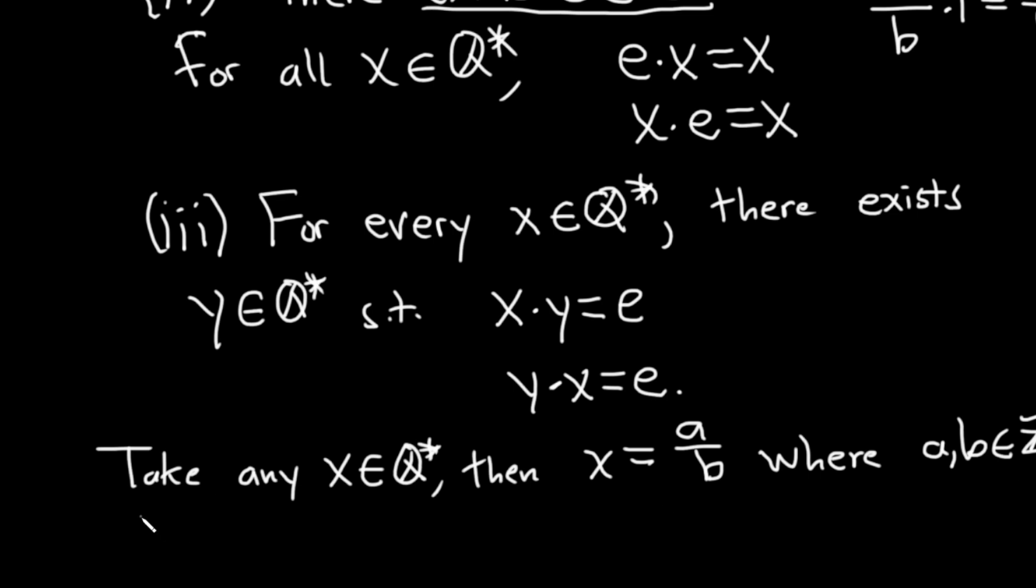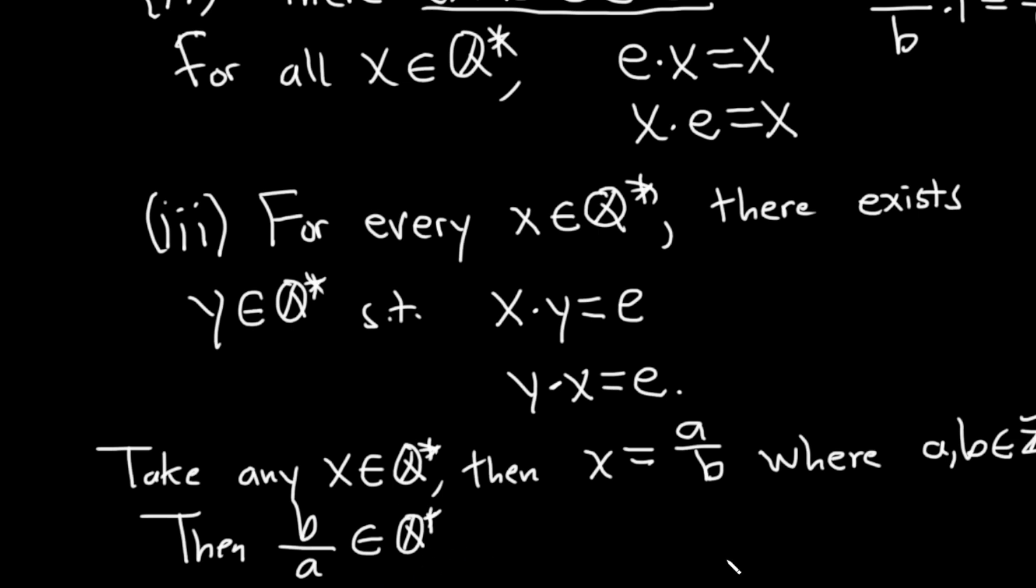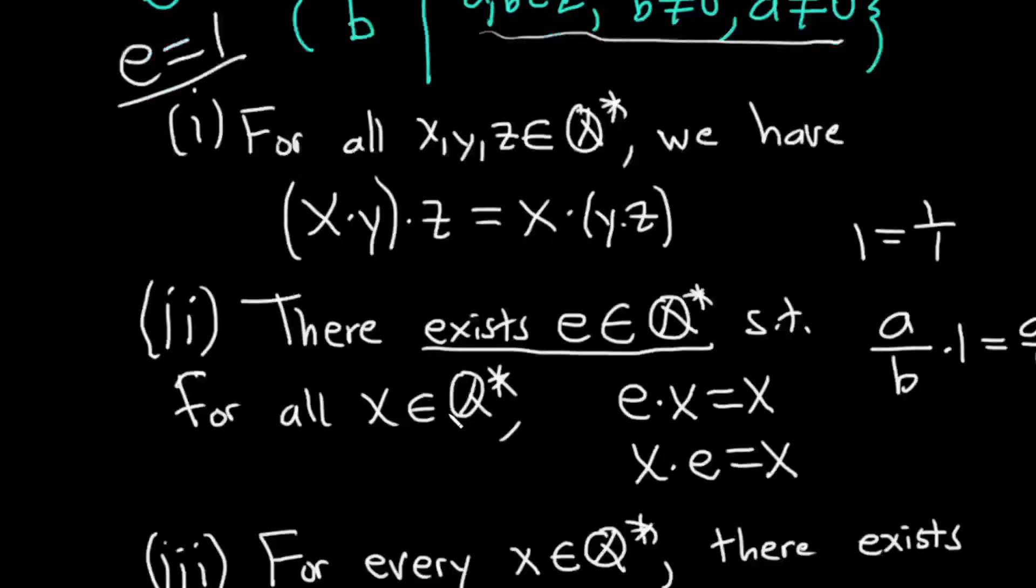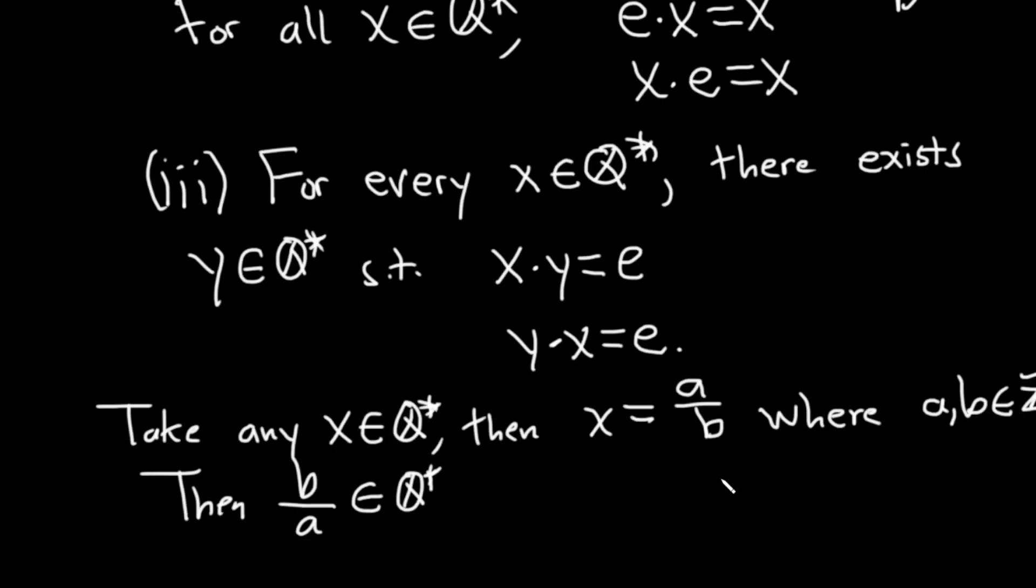So then B over A is also in Q star because B is not zero and A is not zero. So it's an element. That's what it means to be in Q star. They're integers and they're non-zero. So both the numerator and denominator are non-zero. So it's certainly an element in that set. So that's the existence part right there. So we've shown that. We've explained that.